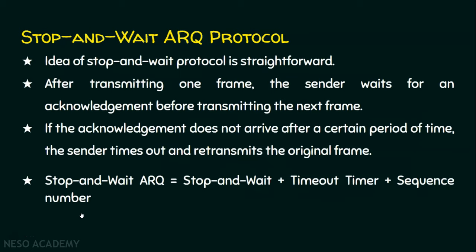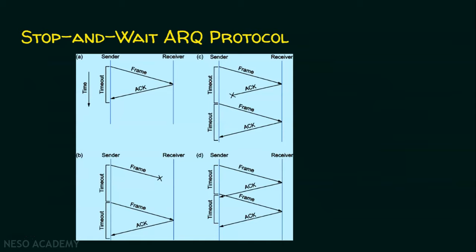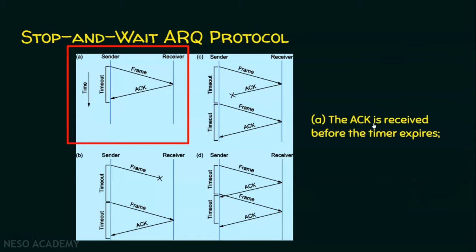Let's see some scenarios to understand stop and wait ARQ protocol better. We have four scenarios: A, B, C, and D. As usual there is a sender and a receiver, and the sender has a timer with a timeout period. In scenario A, the acknowledgement is received before the timer expires. The sender has sent the frame, and the receiver has sent the acknowledgement before the timeout. Before the timer expires in the sender, the acknowledgement is received — this is the perfect case.